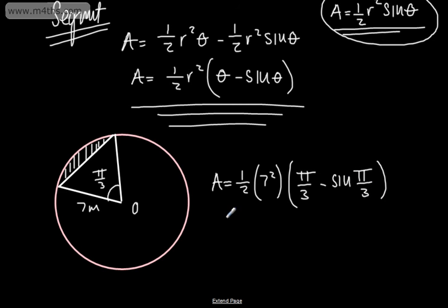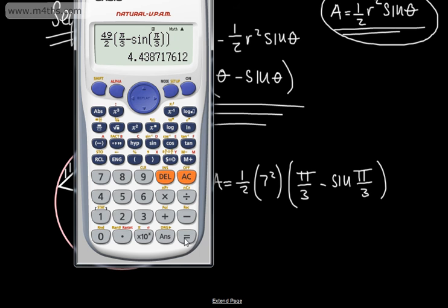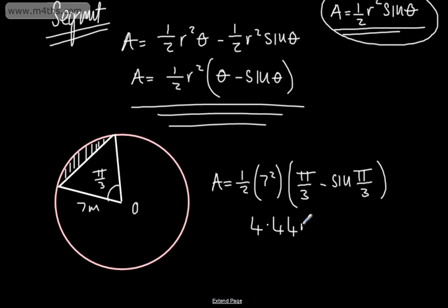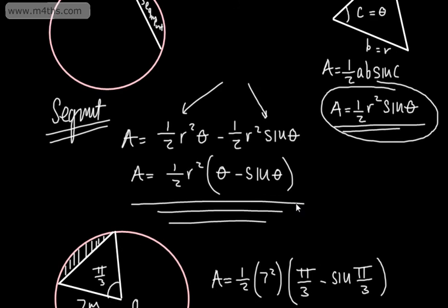All we need to do is plug this into a calculator — we must make sure we're in radians mode, shift mode 4. So 7 squared is 49, so 49 over 2 times the angle pi by 3, then subtract the sine of pi by 3. Sine of pi by 3 is root 3 over 2 if you wanted an exact value. That gives us 4.44 correct to 3 significant figures, so 4.44 meters squared. You could have done this by working out the sector first, then the triangle and subtracting it away, but the factored form makes things slightly easier.